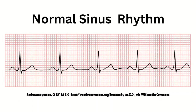First and foremost is normal sinus rhythm. You need to start by learning how to recognize what normal looks like, because it is only then that you can start to recognize when rhythms do not look normal. With normal sinus rhythm, each P wave is followed by a QRS and a T wave. The P wave is the atria contracting, the QRS is the ventricles contracting, and the T wave is the ventricles repolarizing or getting ready to contract again. The heart rate falls between 60 to 100 beats per minute. You should get really familiar with this so that you can see when something is different.